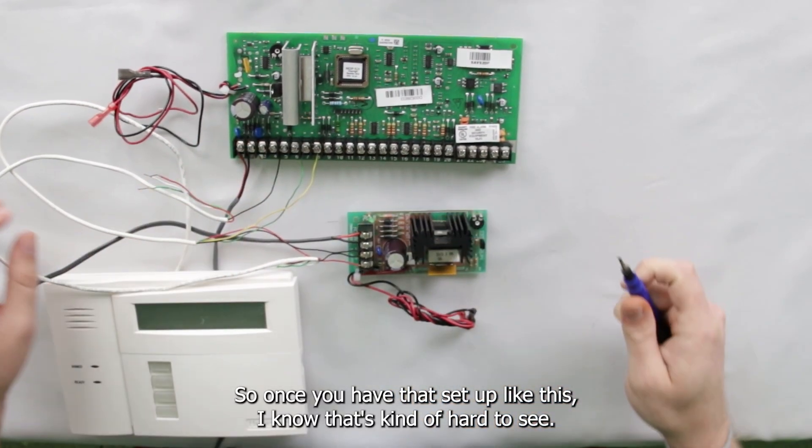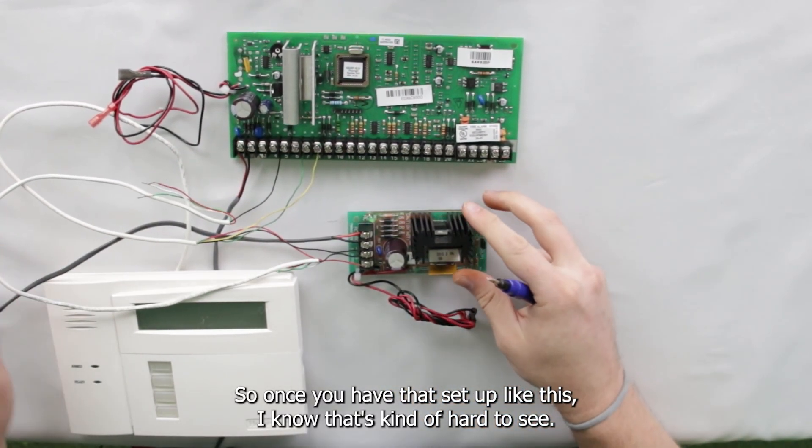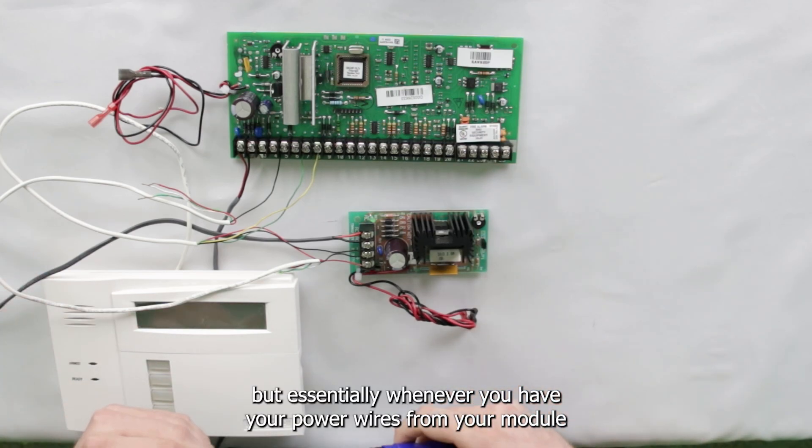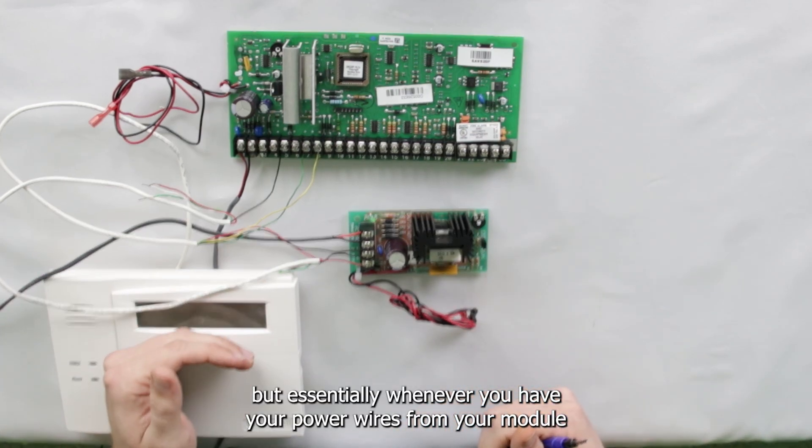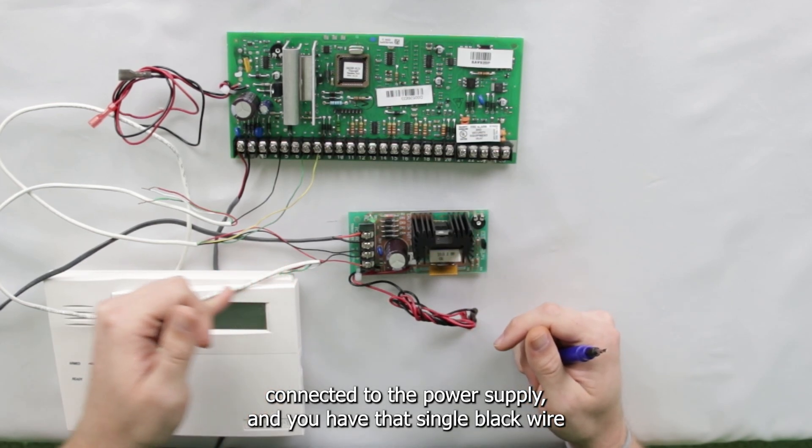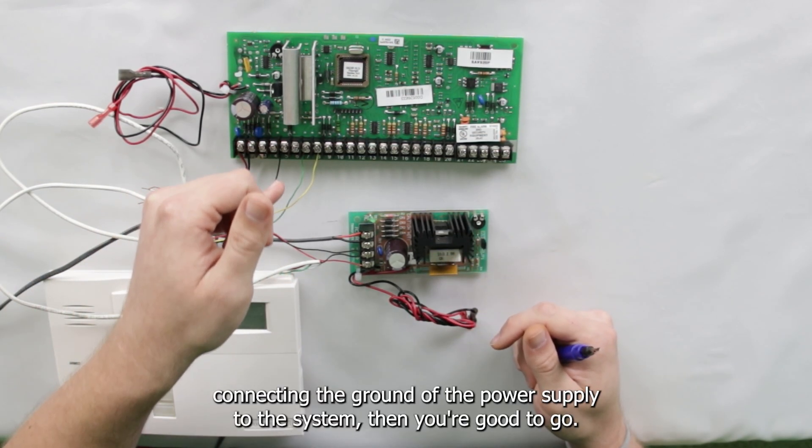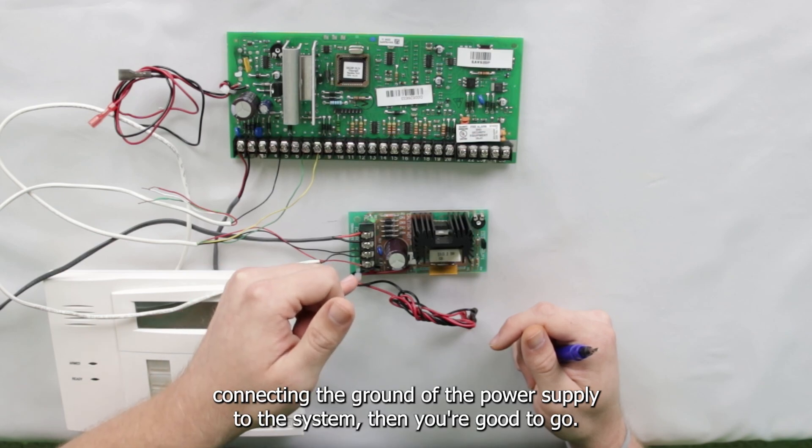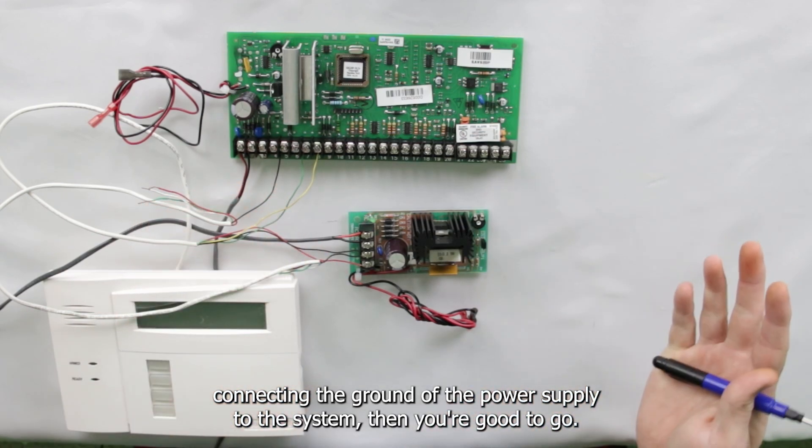So once you have that set up like this, essentially, whenever you have your power wires from your module connected to the power supply and you have that single black wire connecting the ground of the power supply to the system, then you're good to go.